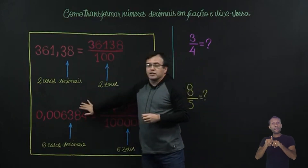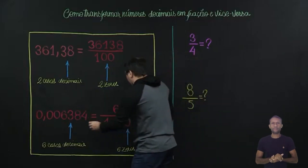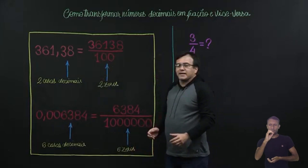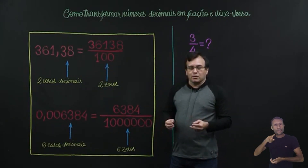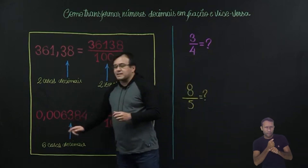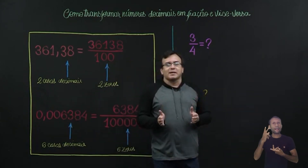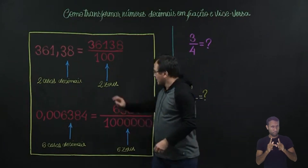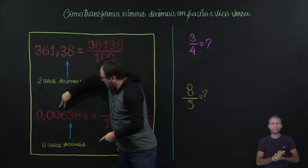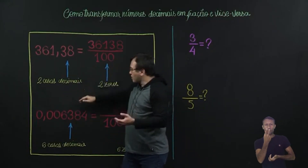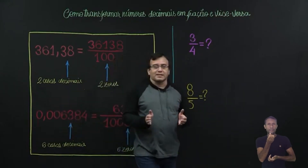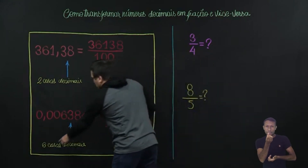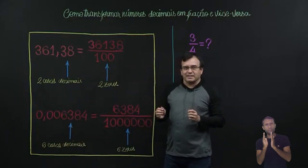A mesma ideia vamos utilizar no próximo exemplo. Reparem que eu tenho 0,006384. Vamos fazer a contagem? Não se esqueçam que essa contagem é sempre em relação aos algarismos que se localizam após a vírgula. Então nós temos aqui: 2, 4, 6. Como nós temos, após a vírgula, 6 algarismos, automaticamente dizemos que esse número possui 6 casas decimais.